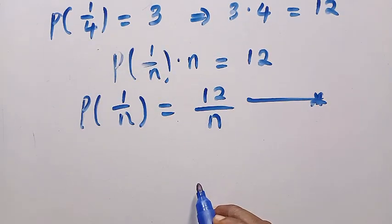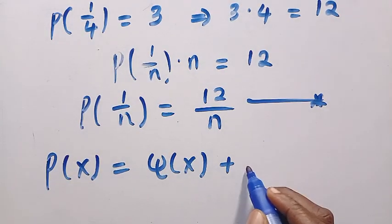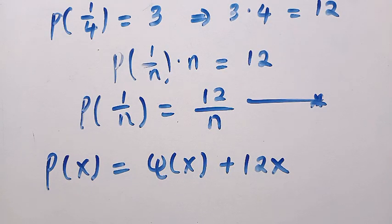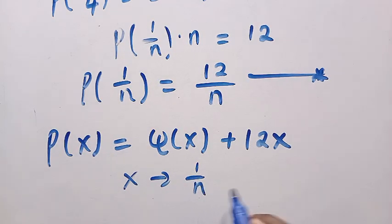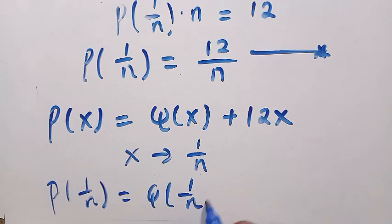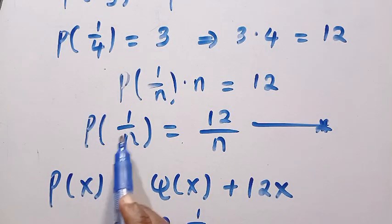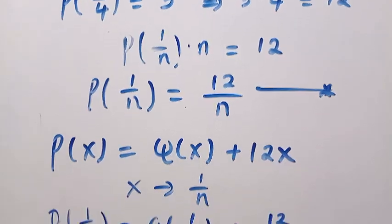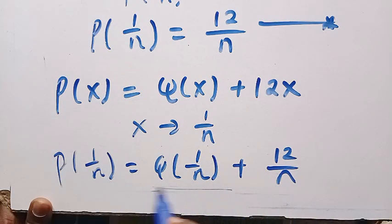Let's say we have P of x equals Q of x plus 12x. If we replace x with 1 over n, then P of 1 over n equals Q of 1 over n plus 12 over n. Since we already established P of 1 over n equals 12 over n, we can see that Q of 1 over n must equal 0.